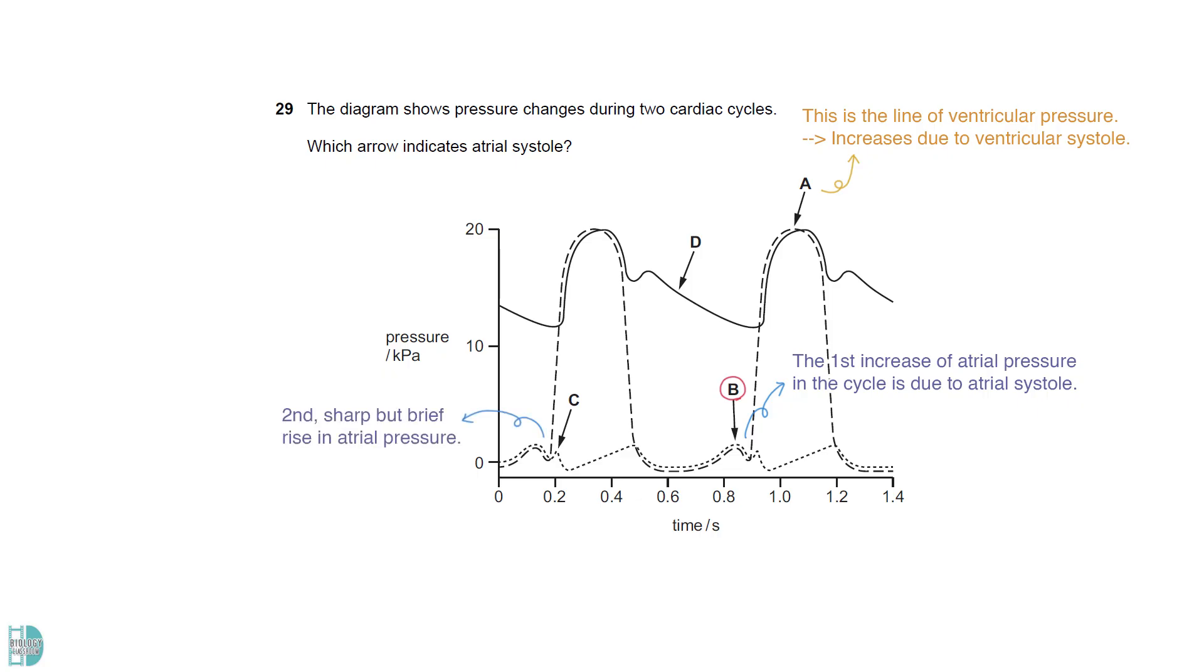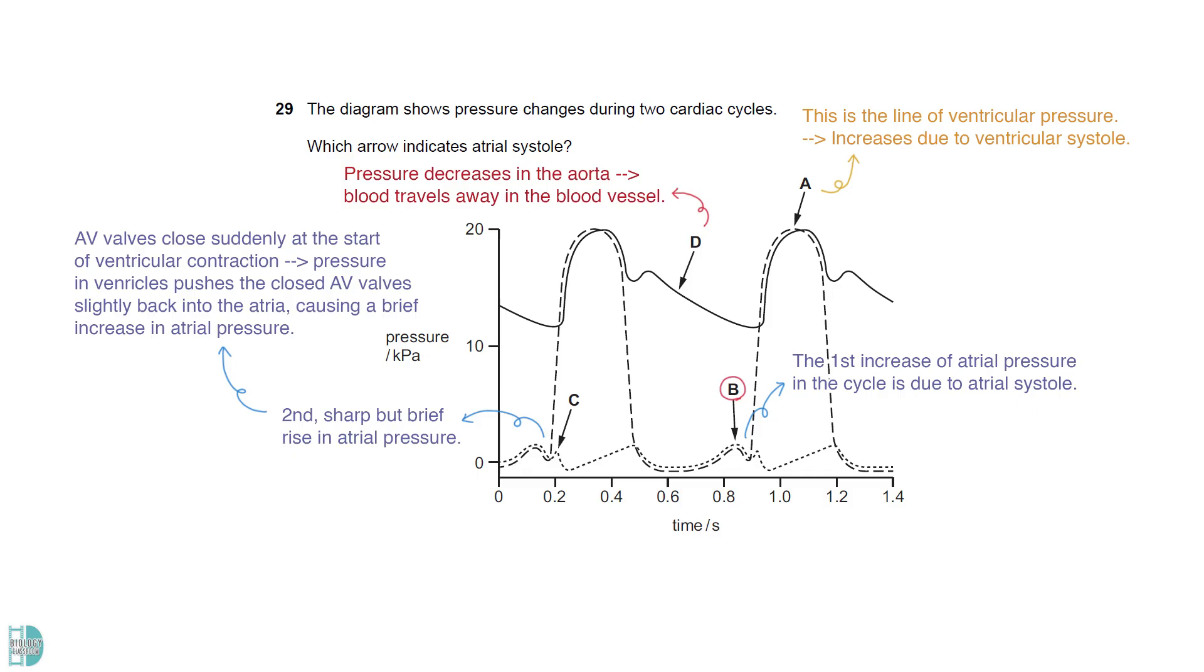C is the second, sharp but brief rise in atrial pressure. This happens because the atrioventricular valves close suddenly at the start of the ventricular contraction. The pressure in ventricles pushes the closed AV valves slightly back into the atria, causing a brief increase in atrial pressure. D points to the decreasing pressure in the aorta. This happens as blood travels away in the blood vessel.